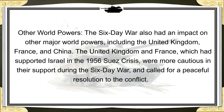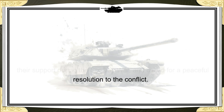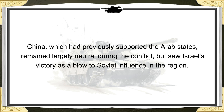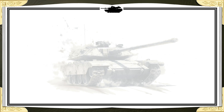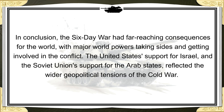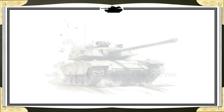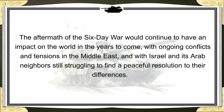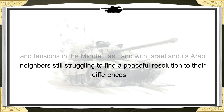The Six-Day War also had an impact on other major world powers, including the United Kingdom, France, and China. The United Kingdom and France, which had supported Israel in the 1956 Suez Crisis, were more cautious in their support during the Six-Day War and called for a peaceful resolution. China, which had previously supported the Arab states, remained largely neutral during the conflict, but saw Israel's victory as a blow to Soviet influence in the region. The United States' support for Israel and the Soviet Union's support for the Arab states reflected the wider geopolitical tensions of the Cold War, with ongoing conflicts and tensions in the Middle East continuing in the years to come.